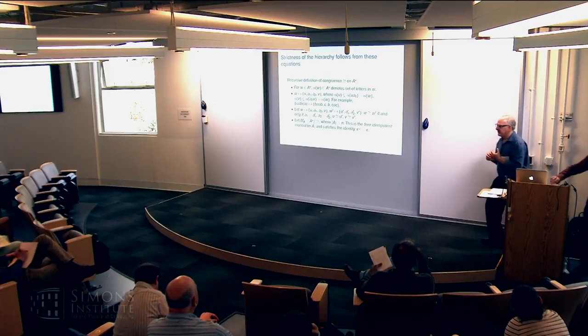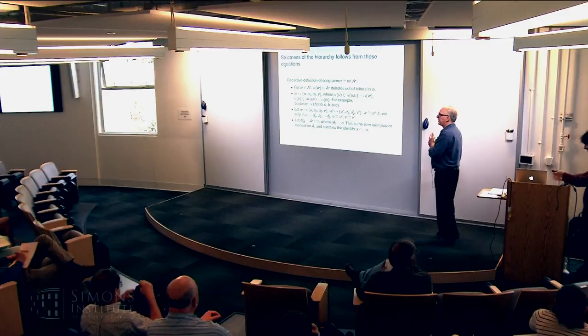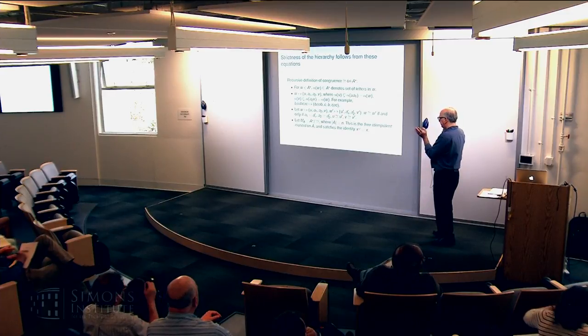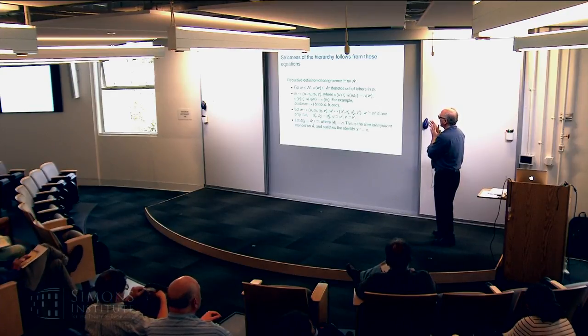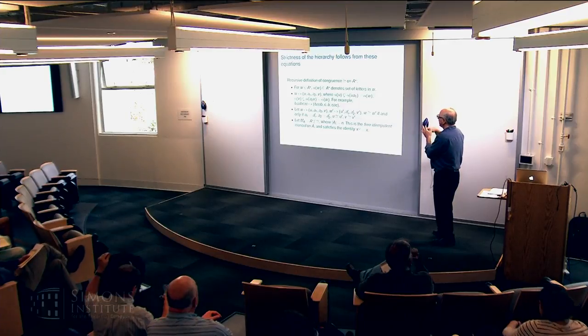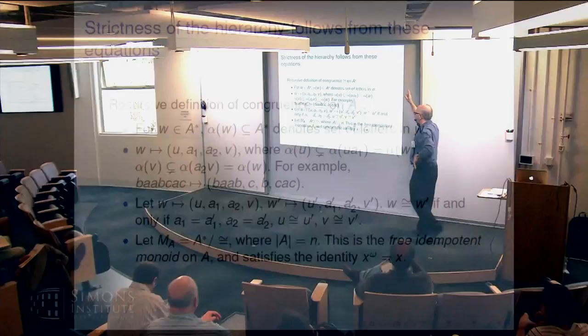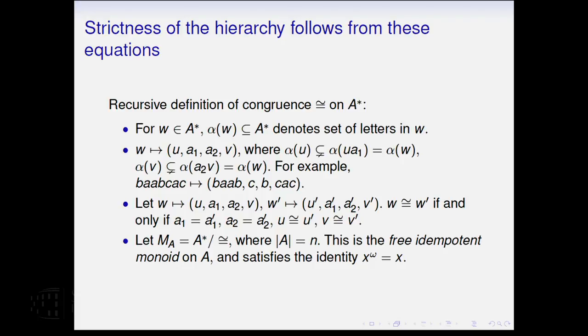So those equations actually give another proof of the strictness of the hierarchy, just to show you what an argument like this would look like. So you define a congruence on A star and the set of words over A. The definition is a little bit fussy to write down the whole thing correctly, but just in a nutshell, don't read all this. Here's the way it works. You look at the word. You read it from left to right and look at the first occurrence of the last letter to occur. So in this case, the letters in the word are A, B, and C, and you read from left to right.